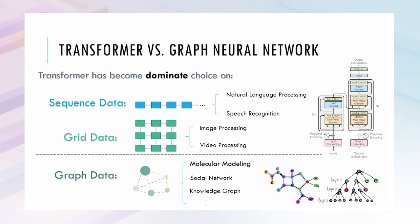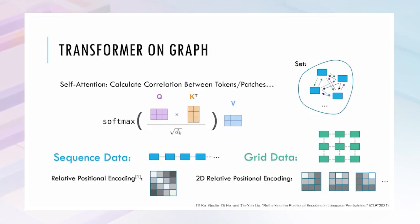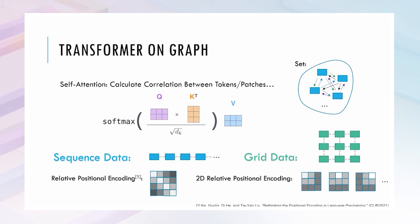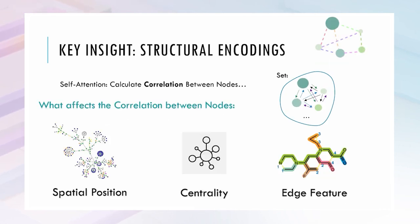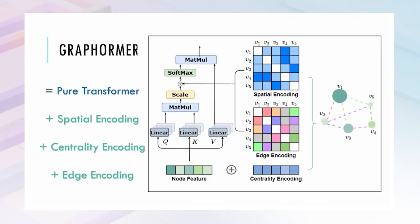We asked why Transformer couldn't be applied to graph data. Many researchers tried but failed. We figured out the reason: the key insight is to encode structural information into the Transformer model. For sequence and grid data, this is positional information. For graphs, it is more complicated — we need to consider spatial position, centrality, and edge features as sufficient structural information. Therefore, we invented the Graphformer model: a pure Transformer plus three structural encodings. This simple yet effective model is quite powerful for molecular simulation tasks.